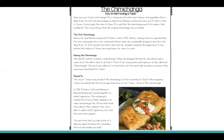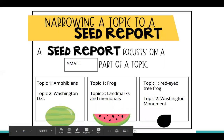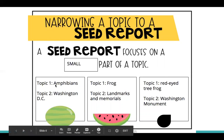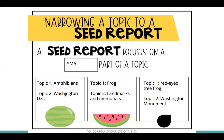So now let's take a look at this chart. You're going to have something that looks like this for your assignment today. It says narrowing a topic to a seed report — a seed report focuses on a small part of a topic. Thinking back to Monday's lesson, we came up with some ideas to write about. I took two of mine: amphibians and Washington, D.C. These are my watermelon topics because they're kind of big. There's a lot of different types of amphibians and a lot I could write about Washington, D.C. — almost too much.